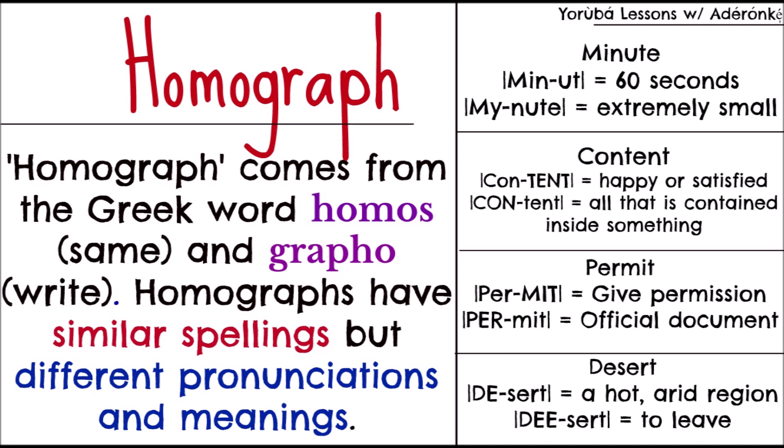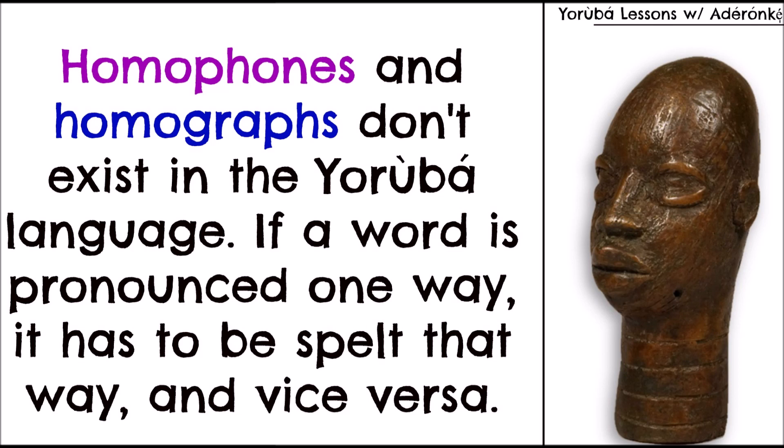P-E-R-M-I-T is another example. You can say 'permit,' to give someone permission — 'I permit you to go out' — and you can say 'permit,' the official document, like your driving permit. D-E-S-E-R-T: you can say 'desert,' which is a hot, arid region, and you can say 'desert,' which means to leave. Similar spelling, different pronunciations and different meanings. These don't exist in the Yoruba language.